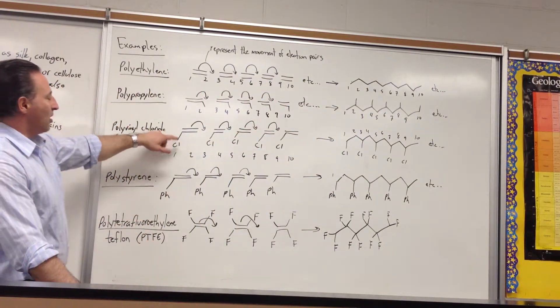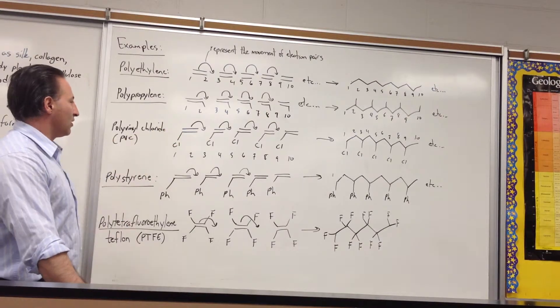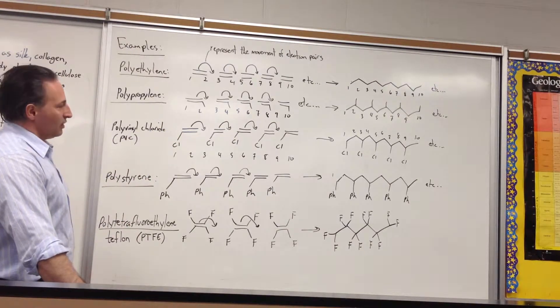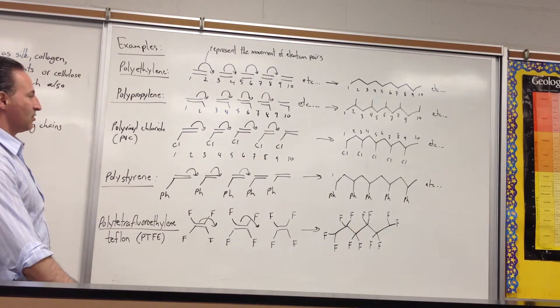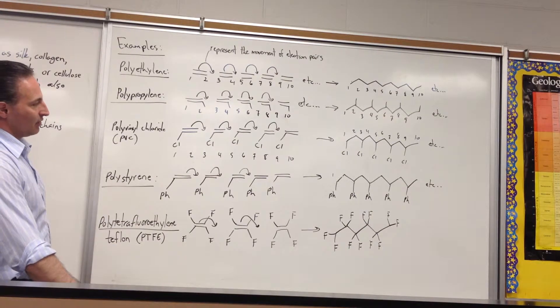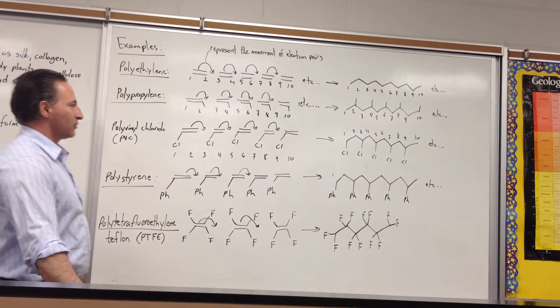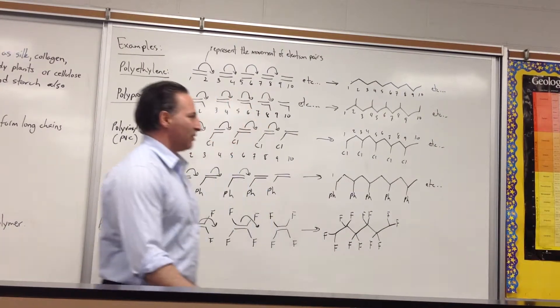If you take the vinyl monomer, which is an ethylene with a chlorine on the first position, you get polyvinyl chloride, which is called PVC. PVC is used for pipe. It's pretty durable. It doesn't react readily with solvents, with most solvents. And it's also somewhat fire resistant.